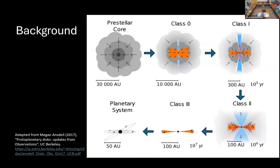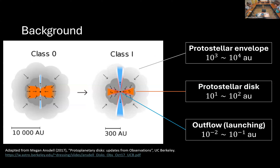In these early phases, the protostar and protostellar disk are still deeply embedded in the protostellar envelope. In the Class 2 phase, the protostellar envelope is depleted due to accretion onto the formed star and the disk. Subsequent evolution during the Class 2 phase — basically the Class 3 and planetary system phases — is the evolution that results in us today. My research focuses on the earliest phase of star formation during the Class 0 and Class 1 phase.